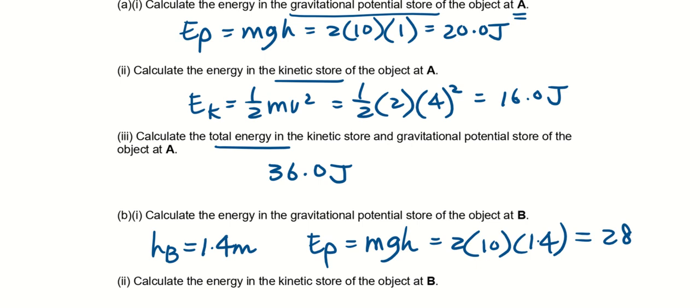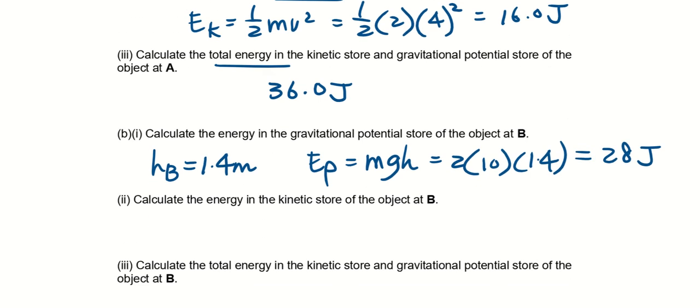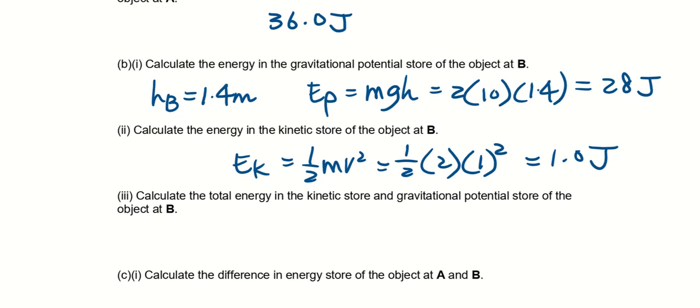So it will be 28 joules. Calculate energy in the kinetic store, so Ek equals half mv squared again, half, the mass is 2, the v is 1 squared, so answer is 1 joule. Calculate the total energy will be 29 joules.